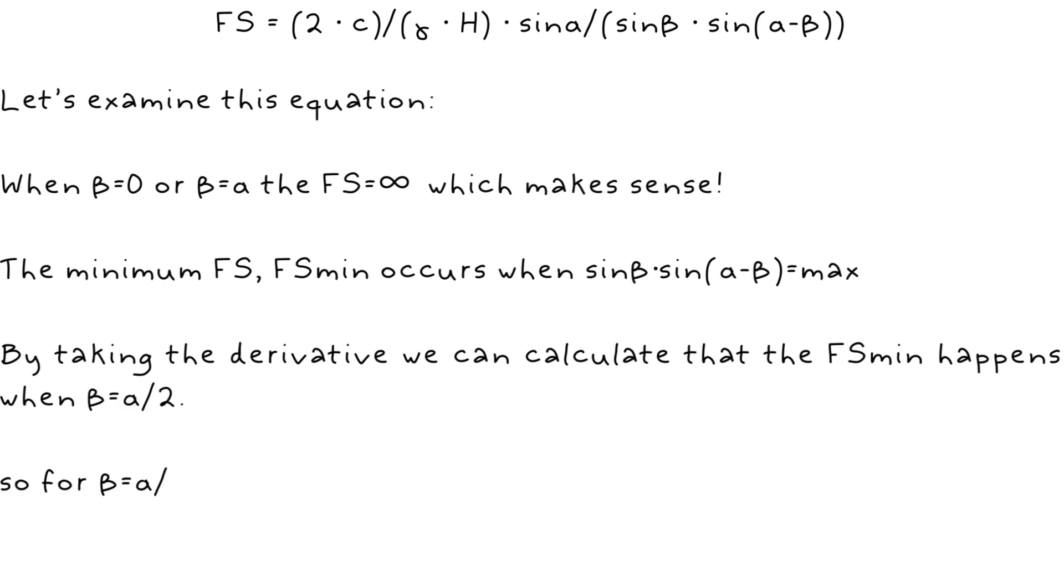Taking the derivative, we can calculate that minimum happens when beta equals alpha over 2, and the equation becomes the one at the bottom of the slide.